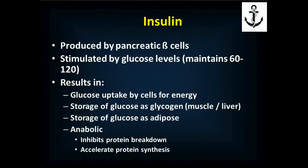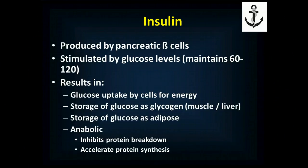Cells will store glucose as glycogen — your muscle and liver do that. Glycogen is a rapid, easily available storage unit of sugar that's simple to break down. Fat cells will store glucose as fat, which is much harder to break down into an energy source, but there are a lot of calories per gram of fat so it's a very compact way to store energy. Insulin is also an anabolic hormone — it inhibits protein breakdown and accelerates protein synthesis, so if you're releasing a lot of insulin, you're getting bigger muscles.